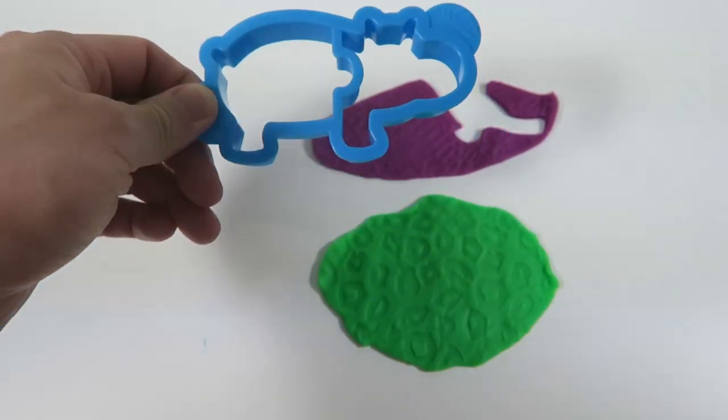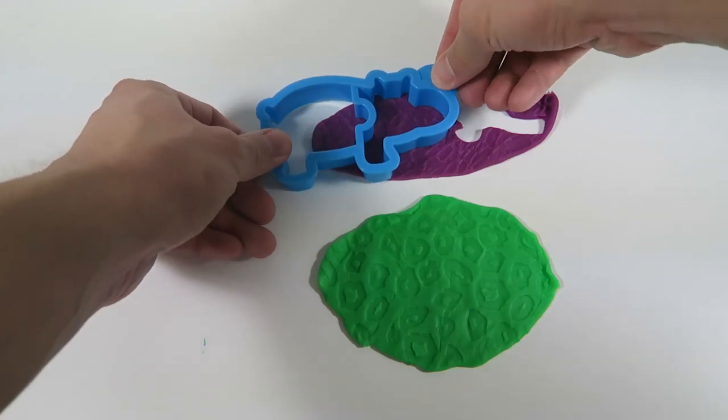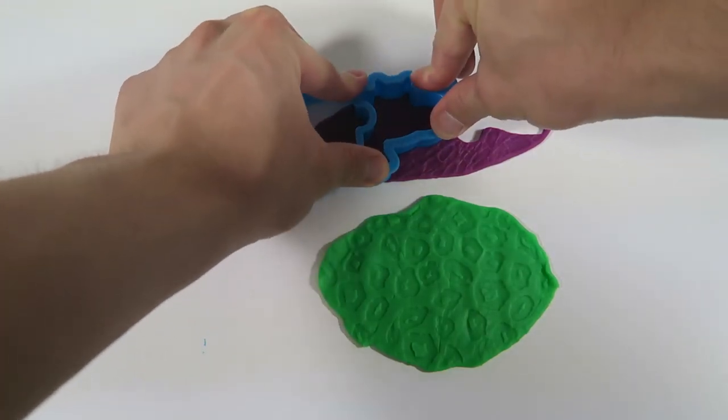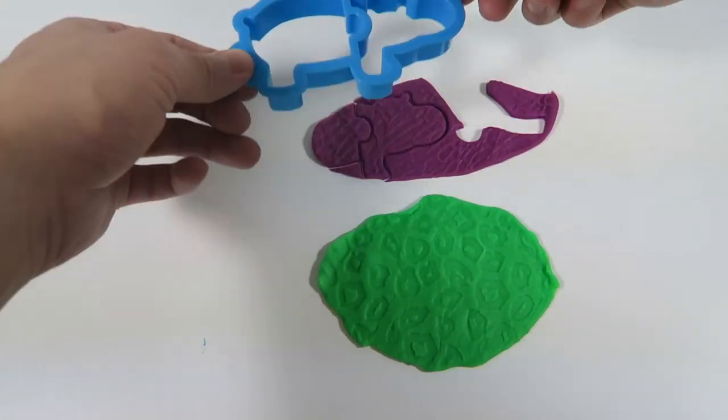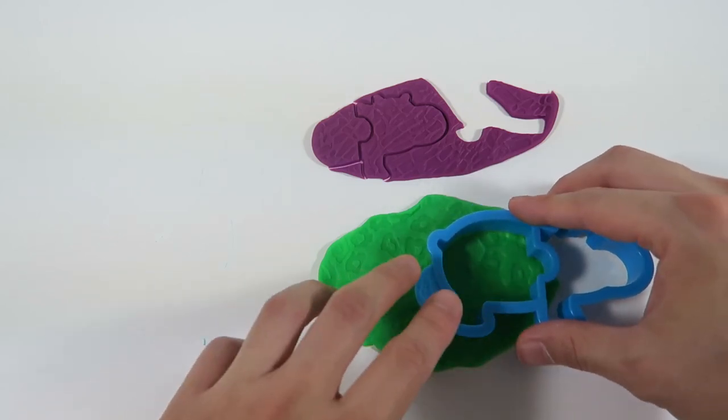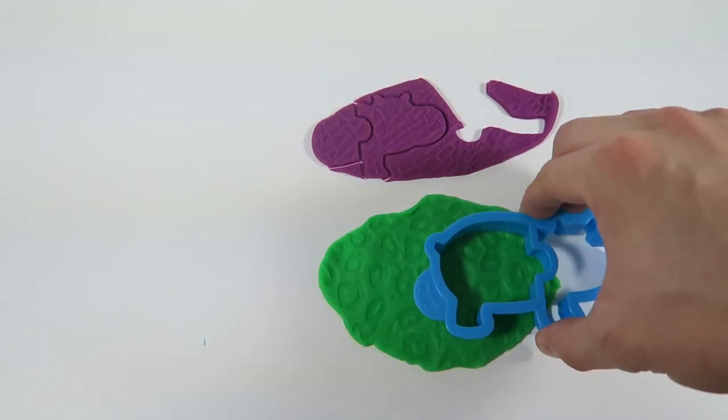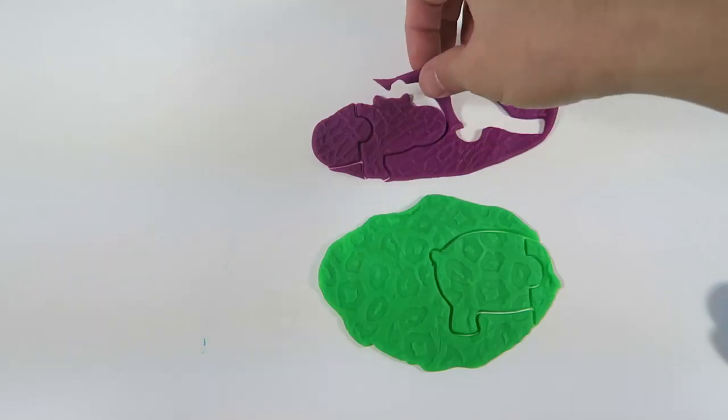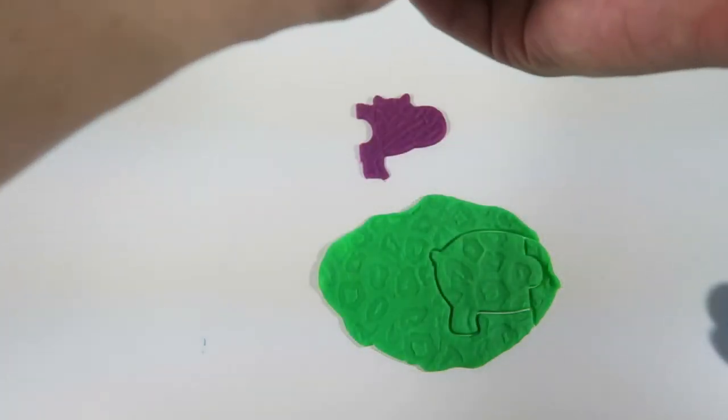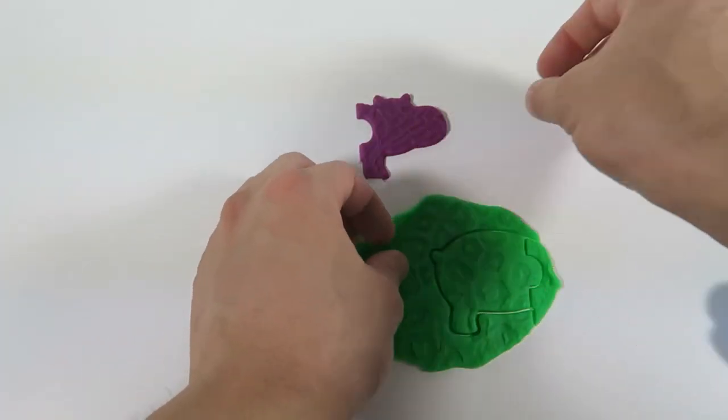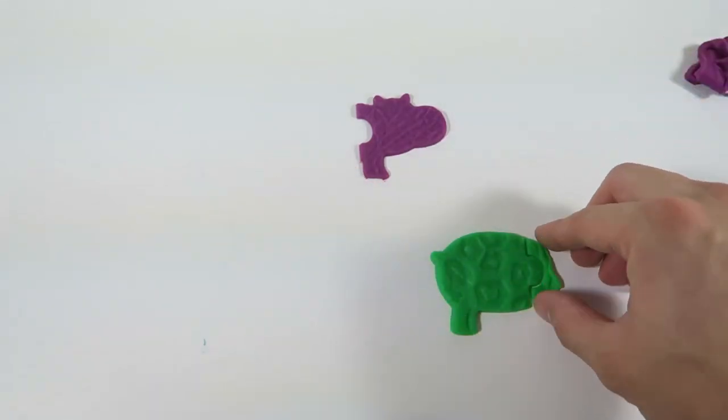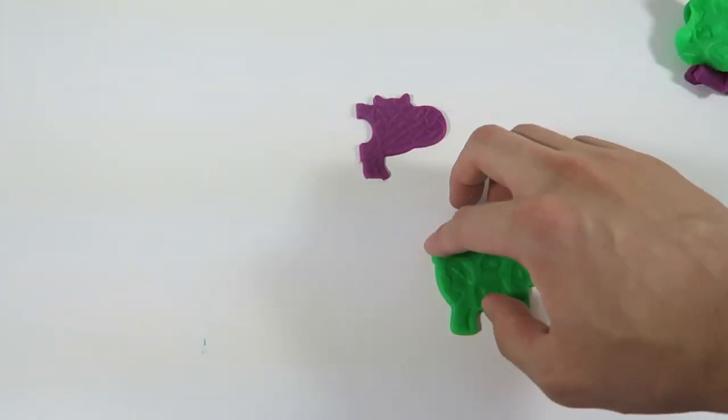Next, let's do the hippopotamus. Same as the giraffe. Remove the excess Play-Doh and put the pieces together.